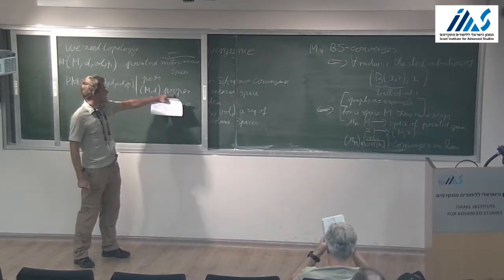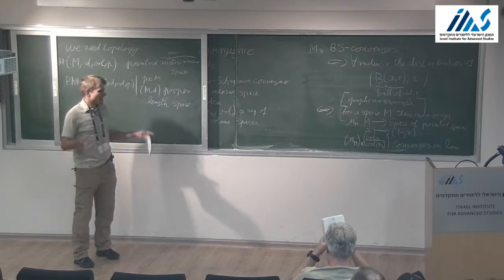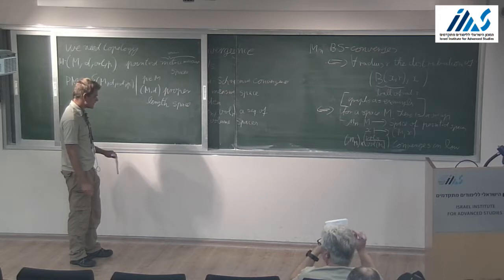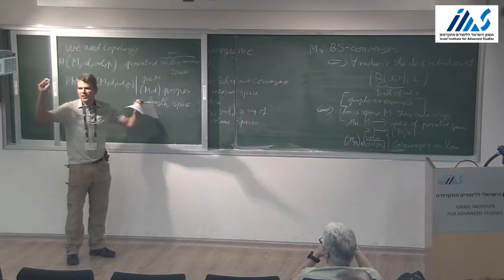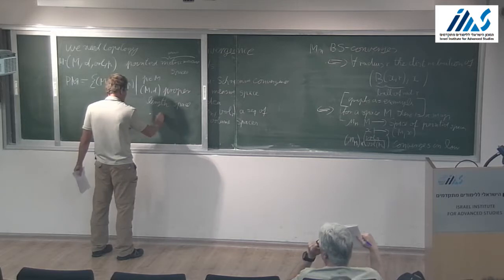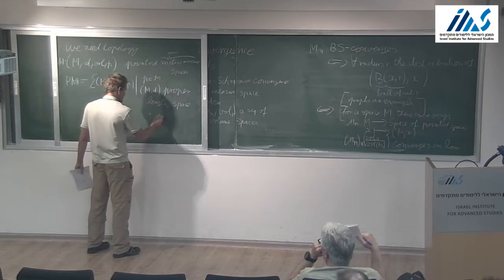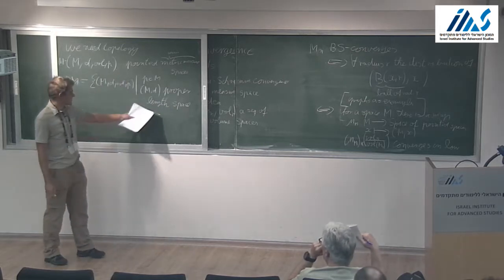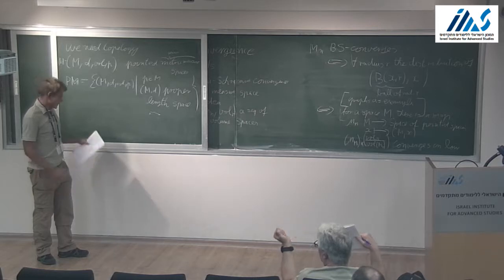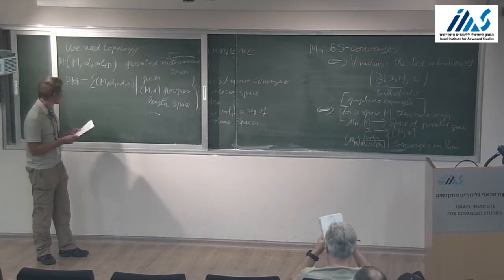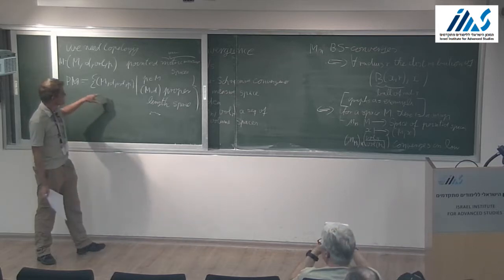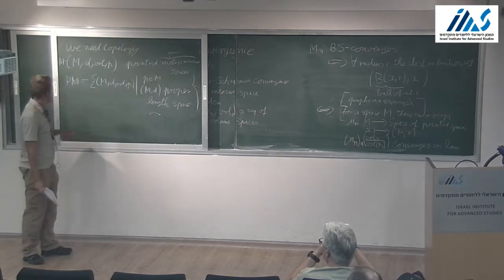What is excluded, for example, is a two-point space, because there is no path from one point to the other. One could even drop this length space assumption, though it simplifies matters, because what you actually need is not only a topology on this space but that it is a metric space. If you want to explicitly state a metric on that space, it's more convenient to work with length spaces.